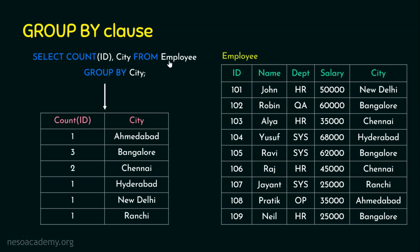Looking at the output, the first column is COUNT(id) and the second is city. The rows are grouped by city: New Delhi has one entry, Amadapur one, Bangalore three, Chennai two, Hyderabad one, and Ranchi one. This is similar to finding the number of students in each class — here we find the count in each city. The output is sorted by city.